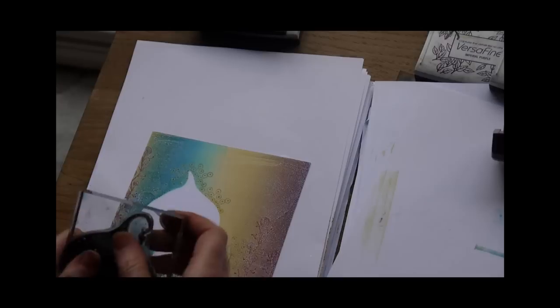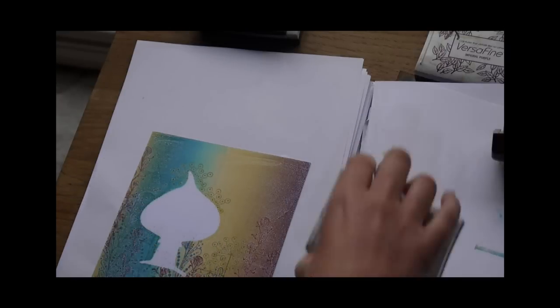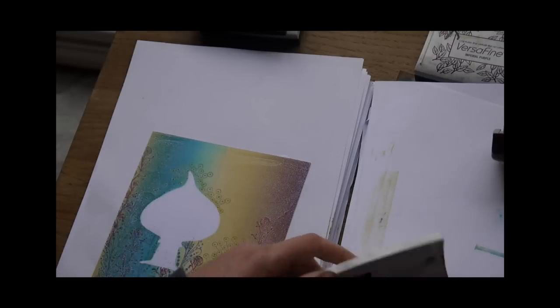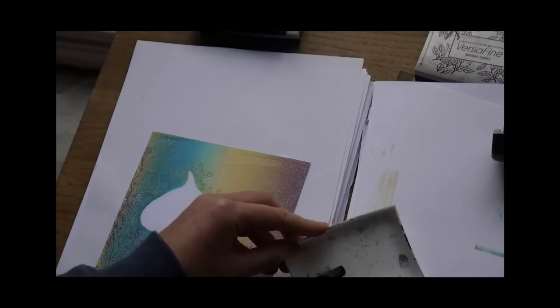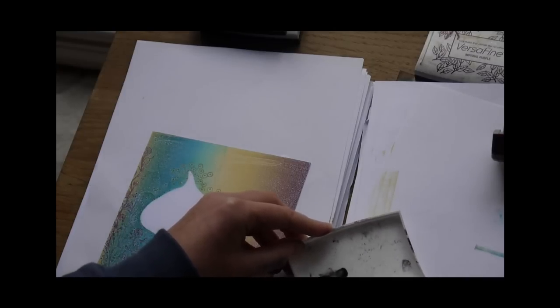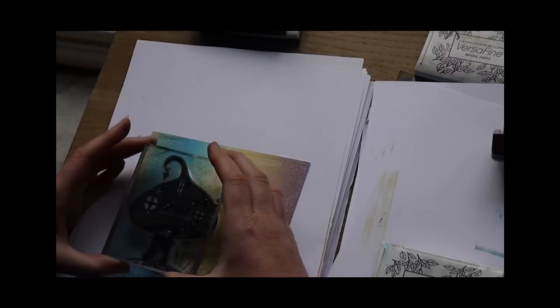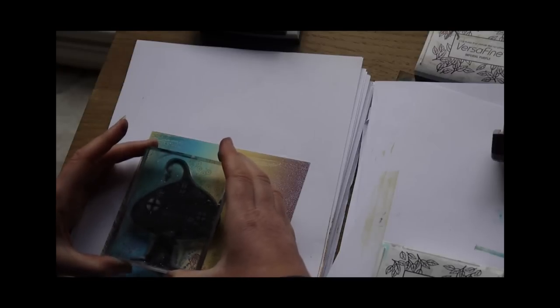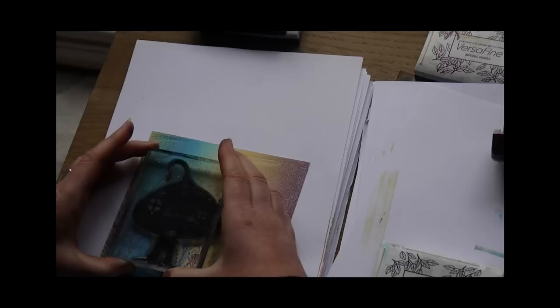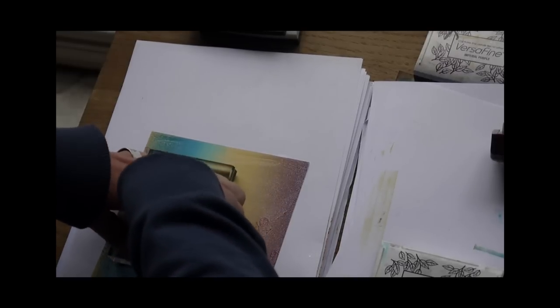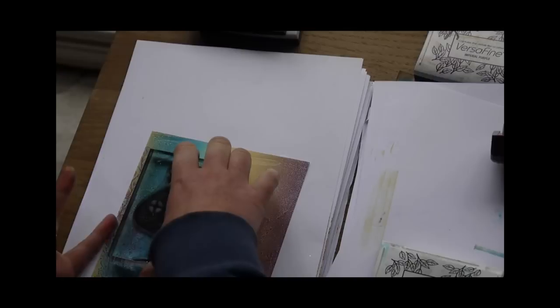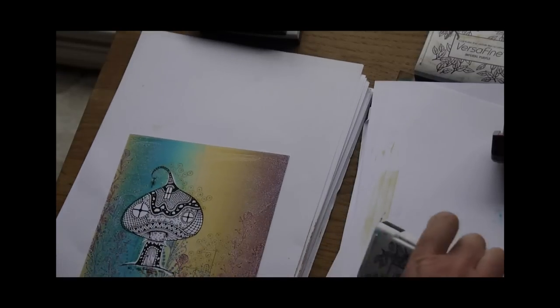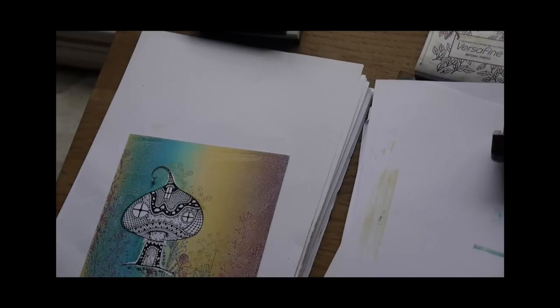Now, using our Zentangle Mushroom House, we're going to now ink up in the Onyx Black Versafine, and then simply line that up the best that we can. Don't worry if you leave any areas out, you can touch those up after. Okay, so placing down, give that a really good press.